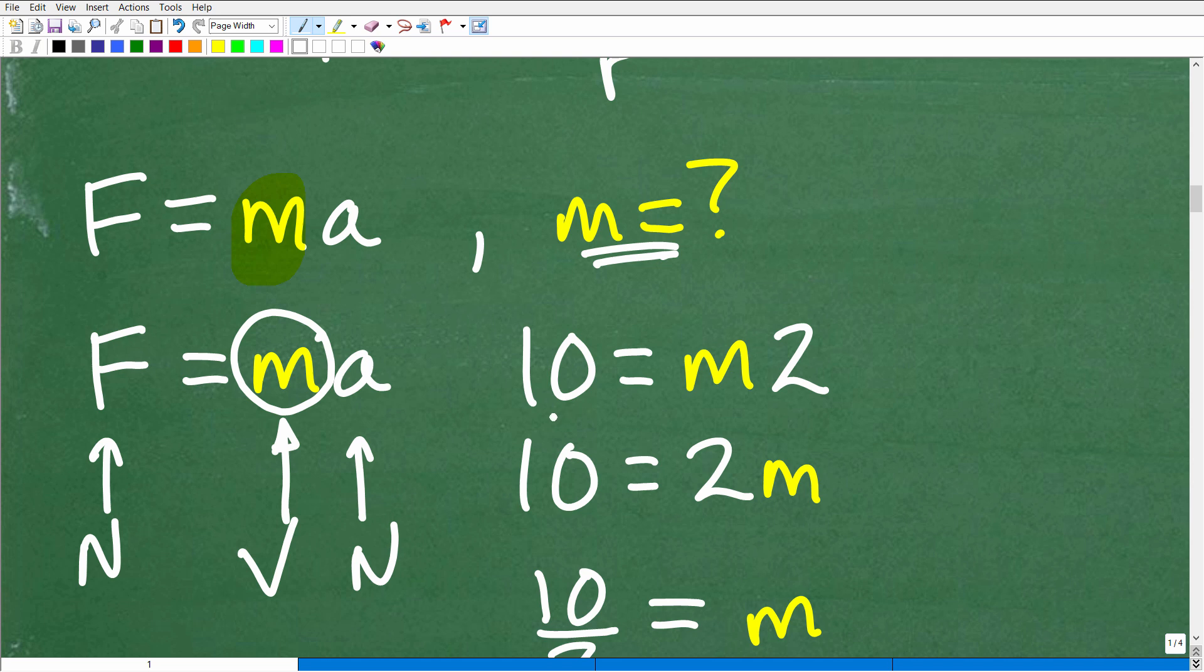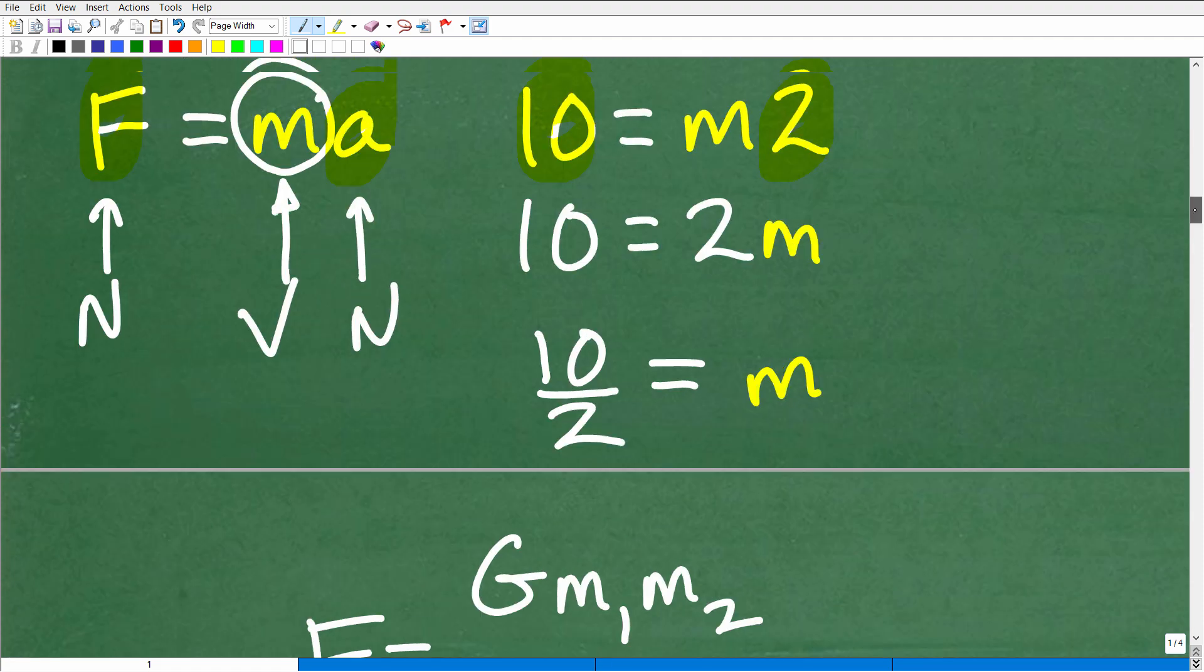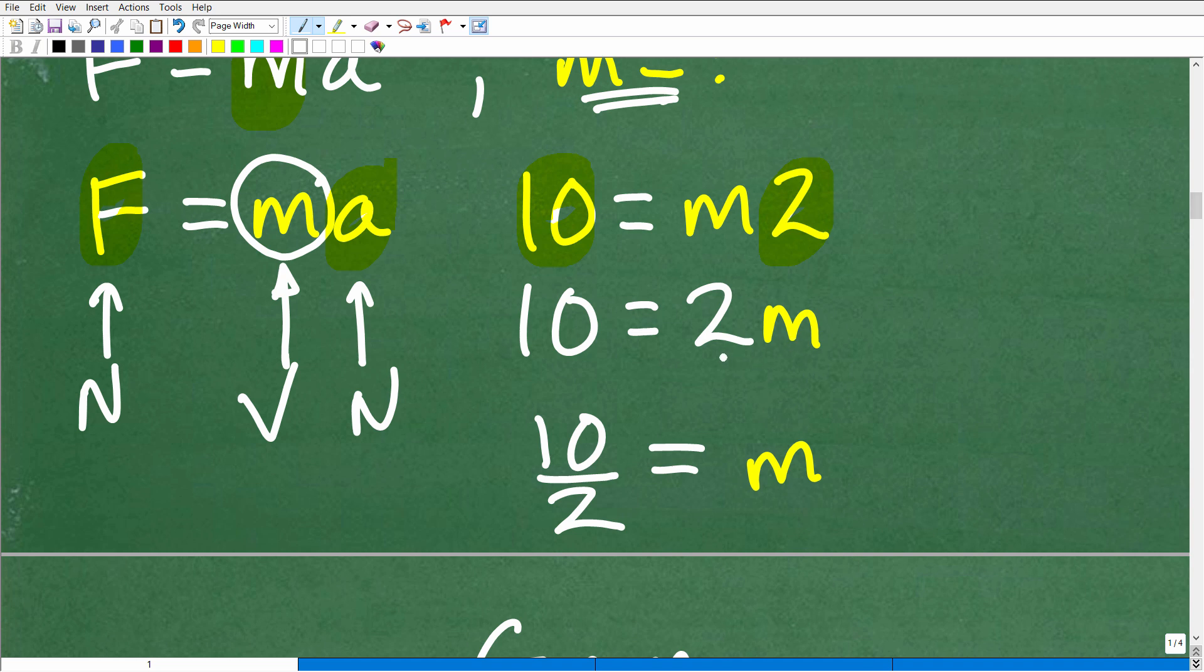So here, for example, I got F is equal to M times A. Let's just make up a number for F, an easy number. How about 10? And then M? That's our variable. So we'll keep that as M. We'll make up an easy number for A. How about like 2? So how would I solve for M given 10 is equal to M times 2? Now M times 2 is the same thing as 2 times M. So we're talking super basic algebra. So to solve for M, all I would have to do is divide both sides of the equation by 2. So M is equal to 10 divided by 2.